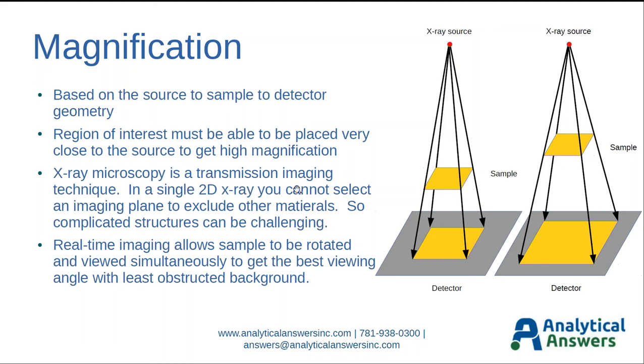One thing to keep in mind: X-ray microscopy is a transmission imaging technique. It's not like you have a depth of field where you can select a particular imaging plane. You basically see everything that's between the source and the detector. If you have very complicated structures, it can be very challenging to see the layer of interest. That's one of the advantages of real-time imaging that you can really select the proper viewing angle for every sample. Sometimes fractions of a degree are required to really go from an image that shows you what you need to see to not being able to see anything at all.